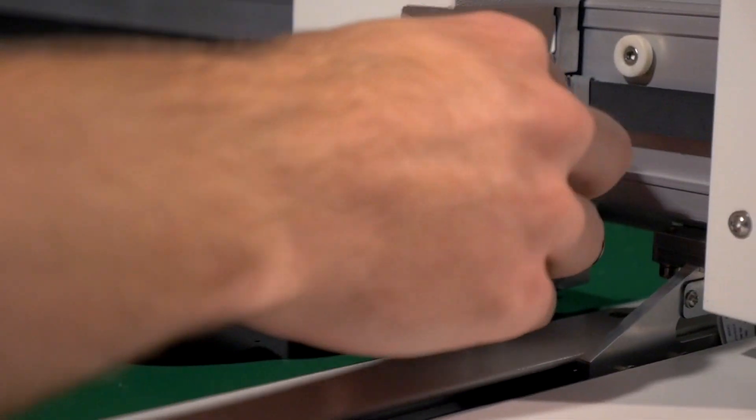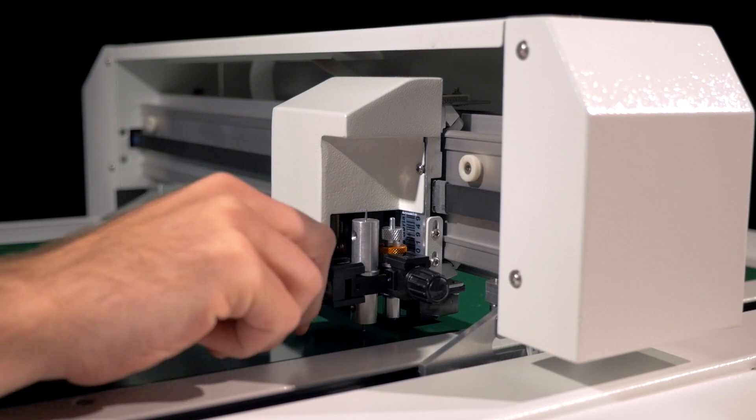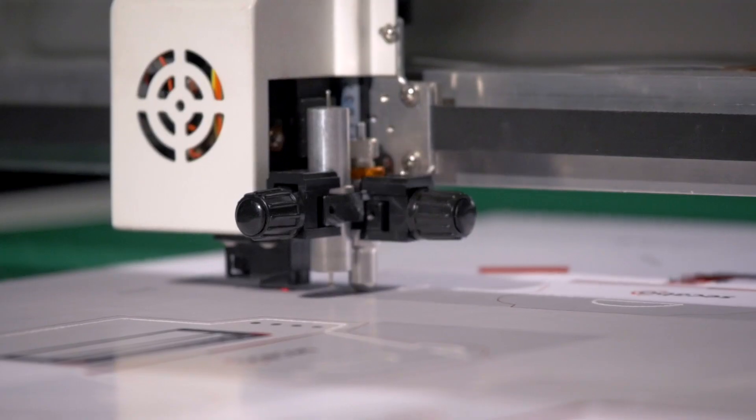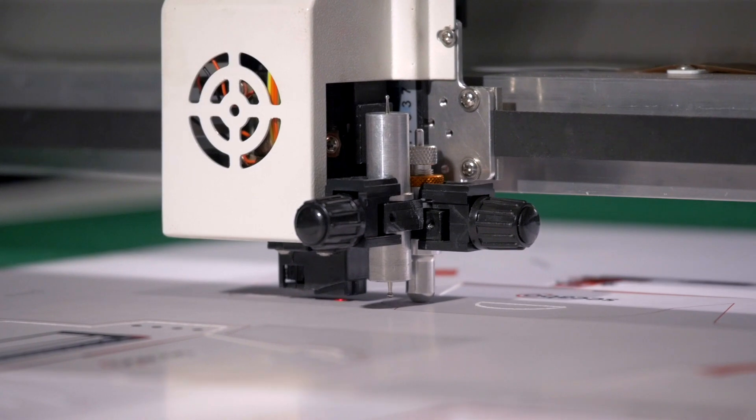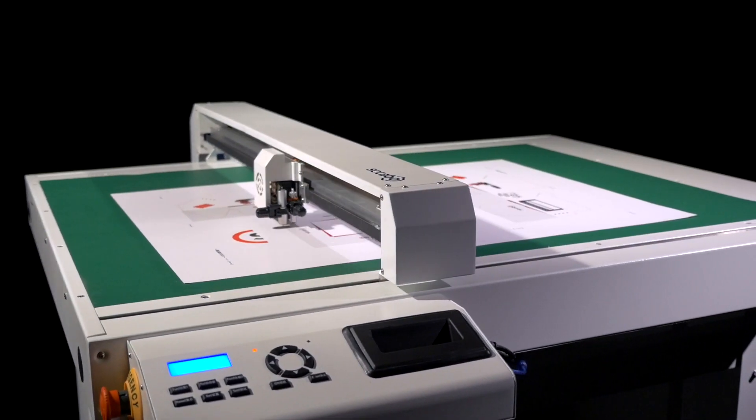In addition to a drag knife, the double tool head can also be equipped with grooving and creasing tools of various sizes. Thus, objects can be cut with absolute contour precision and grooves or folding edges can be added if desired.